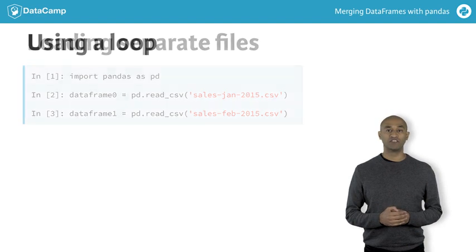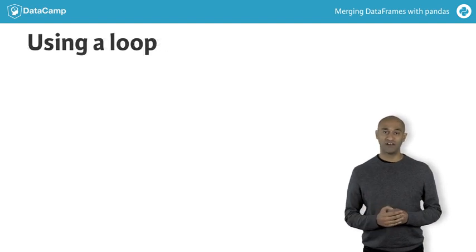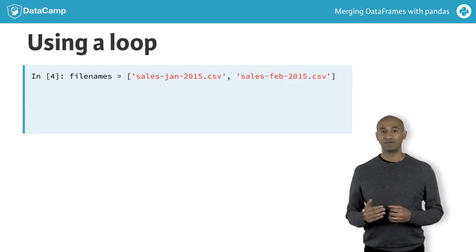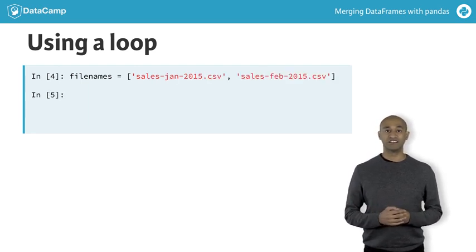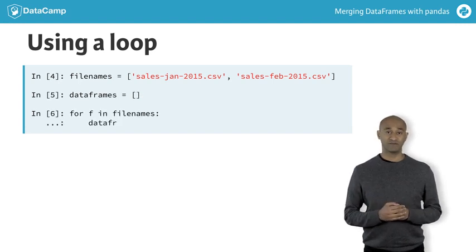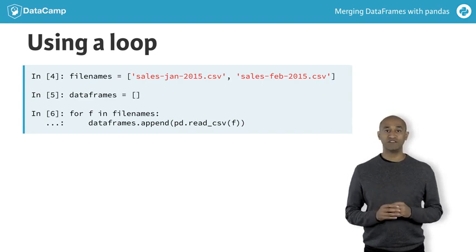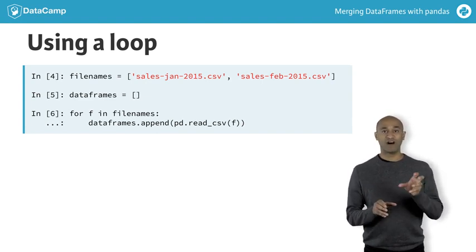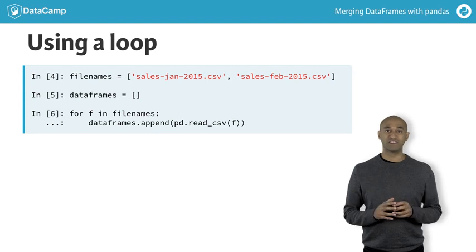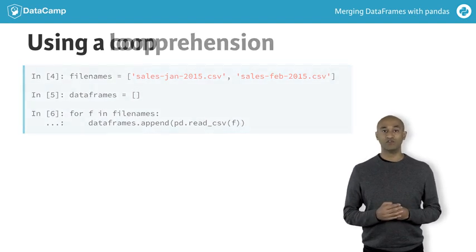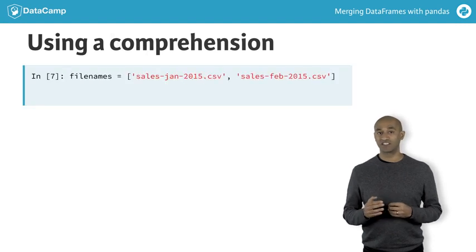It's generally more efficient to iterate over a collection of file names. With that goal, we can create a list of file names with the two file paths from before. We then initialize an empty list called data_frames and iterate through the list of file names. Within each iteration, we invoke read_csv to read a data frame from a file and append the resulting data frame to the list data_frames. We can also do this computation with a list comprehension.